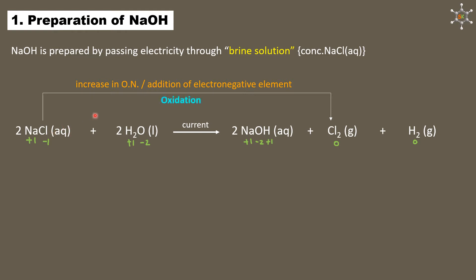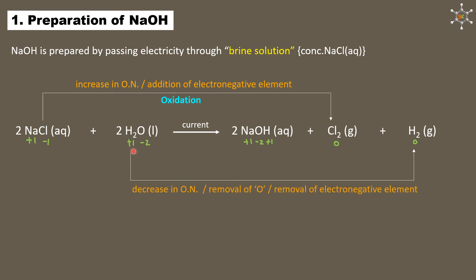For hydrogen formation from water, the oxidation number of hydrogen decreases from +1 to 0, meaning we have removed an electronegative element (oxygen) from water to get hydrogen as the product. This means water has undergone reduction to give hydrogen as the reduced product.